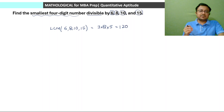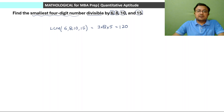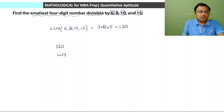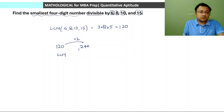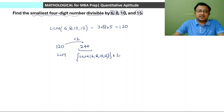So 120 is the least such number which is divisible by 6, 8, 10 and 15. What could be the second number? If you multiply 120 by 2, 240 will also be divisible by all these numbers. This is LCM multiplied by 2, so it must be divisible by all the given numbers.